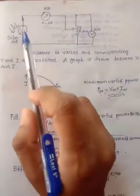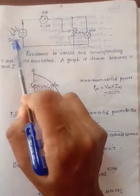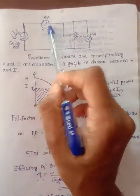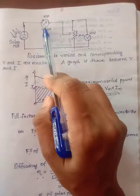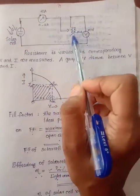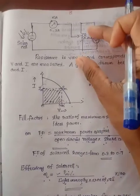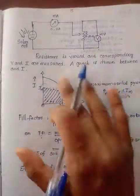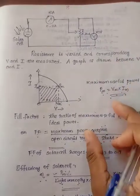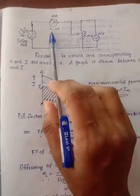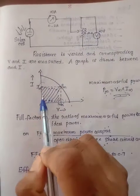For the V-I characteristics, we have a connection using the solar cell symbol. When light is incident on it, it shows arrows. We have a milliammeter, a resistance box, and a millivoltmeter. We change the light and allow the current and voltage to vary by fixing and varying the resistance. Resistance is varied and the current and voltage are measured using the milliammeter and millivoltmeter.